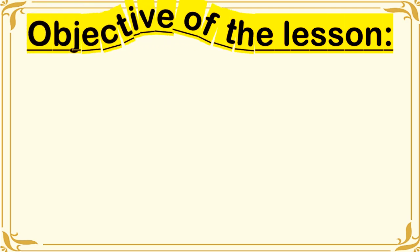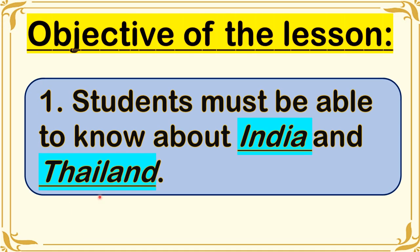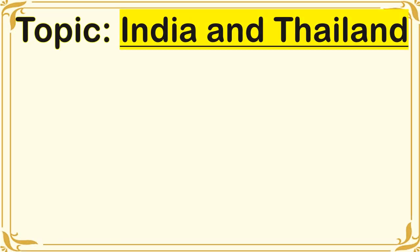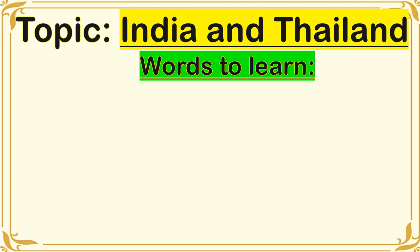For the objective of our lesson today, you are going to learn about India and Thailand. I expect that at the end of this online discussion, you already know some important information about India and Thailand. But first, we have to read the vocabulary words or words to learn that we will be encountering throughout our discussion. Please repeat after me so you can practice your reading and speaking skills even if you are just at home. Are you ready now? Let's start reading.